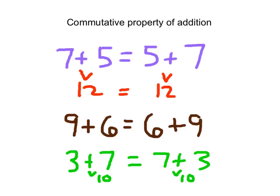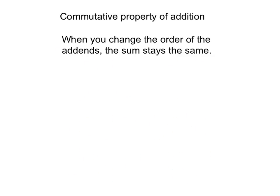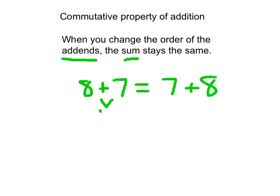When you change the order of the addends, the sum stays the same. Commutative property of addition: when you change the order of the numbers you're adding together, the sum — which is the answer to an addition problem — still stays the same. So 8 plus 7 does equal 7 plus 8, where we change the order of those addends, and that sum, 15, does stay the same. 15 does equal 15.